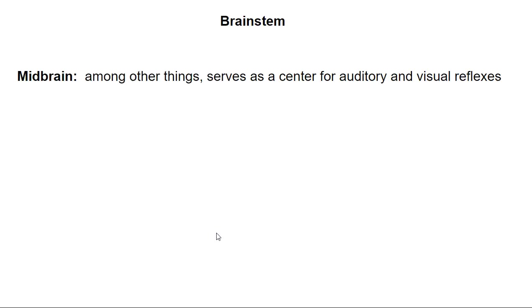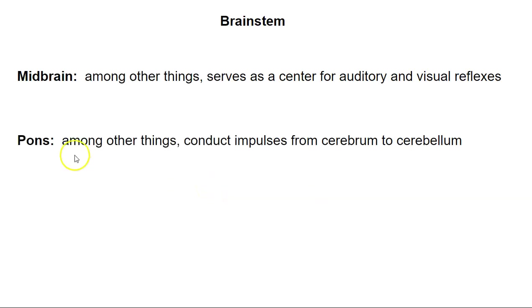First, the midbrain. Among other things, it serves as a center for auditory and visual reflexes — for example, if a car behind you honks its horn and you rapidly turn your head to find the noise, some of that is processed in the midbrain. The pons conducts impulses from the cerebrum to the cerebellum, so information from the cerebral cortex travels through the pons to help coordinate musculoskeletal movements.